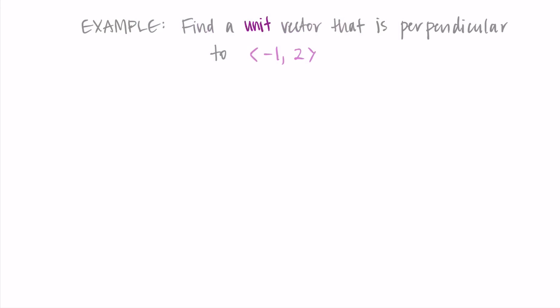So here, the unit vector is going to have fewer options for the solution, since we need to specifically find the vector that has a magnitude of 1 for the unit vector.